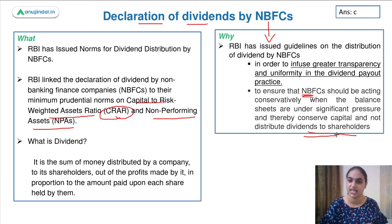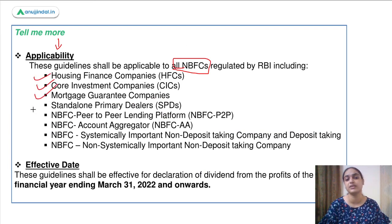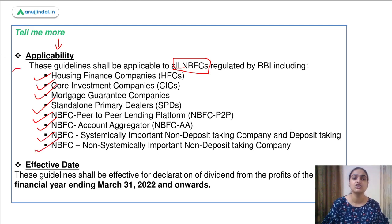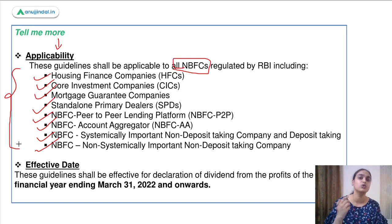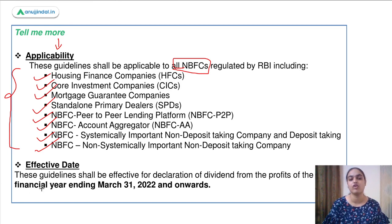That's why RBI has released these guidelines for NBFCs. Talking about the applicability of these new norms, they are applicable to all NBFCs — be it housing finance companies, core investment companies, mortgage guarantee companies, standalone primary dealers, peer-to-peer lending platforms, account aggregators, systemically important non-deposit-taking and deposit-taking NBFCs, and non-systemically important non-deposit-taking NBFCs. The guideline is effective for profits for the year ending 31st March 2022.